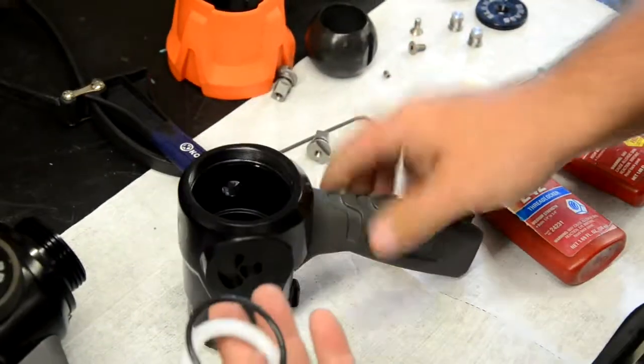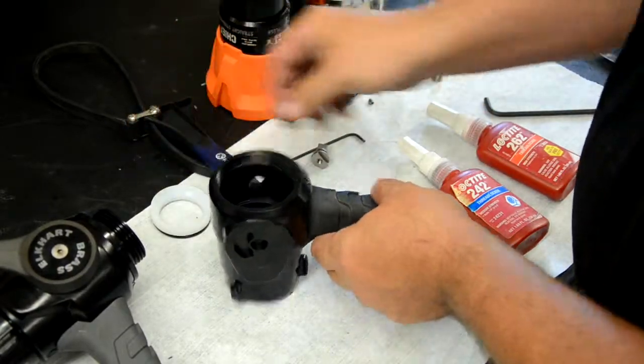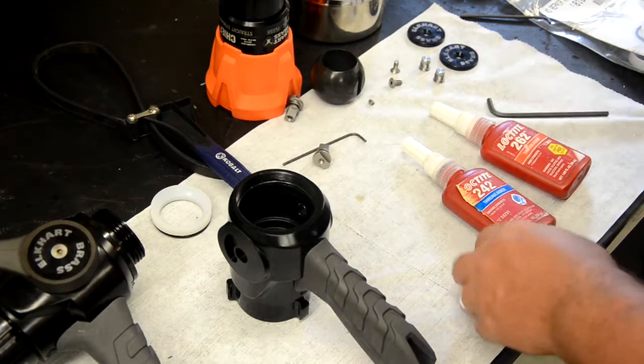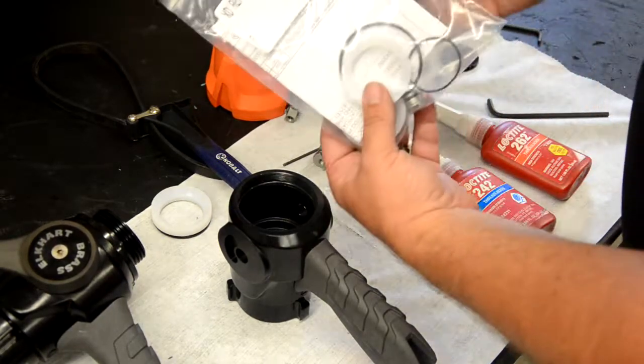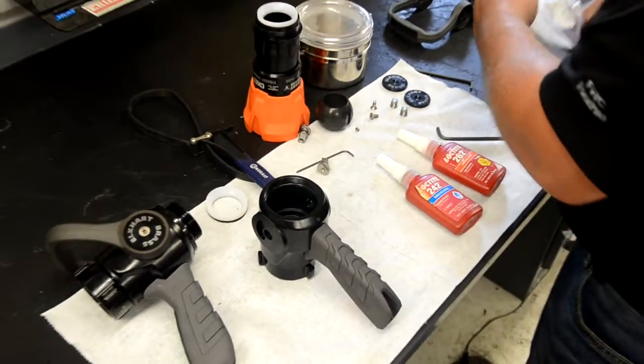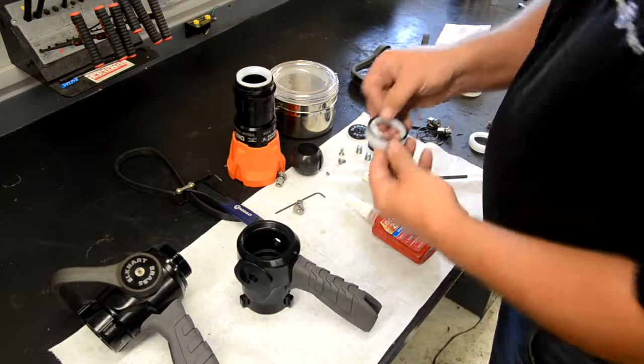With the bail handle removed, we can now remove the rear shutoff seat and remove that o-ring through the discharge side of the shutoff body. Go ahead and clean any dirt or debris you find inside the shutoff body and reusable parts. We're now ready to install the new parts from the XD Repair Kit. Be sure to lubricate all o-rings with Dow Corning number 7 silicone grease during installation.